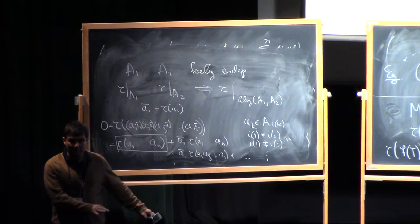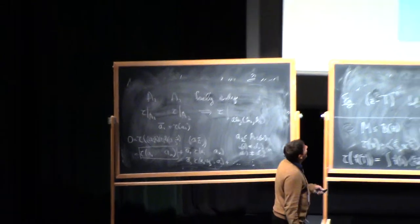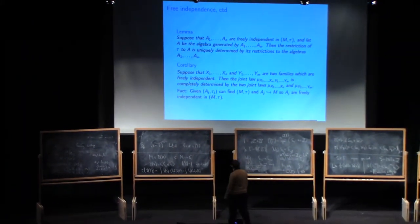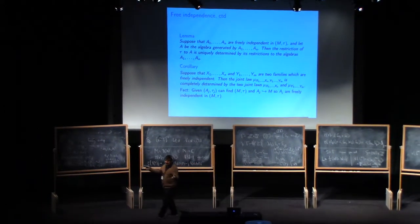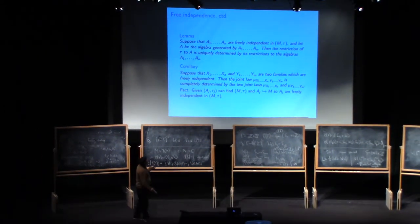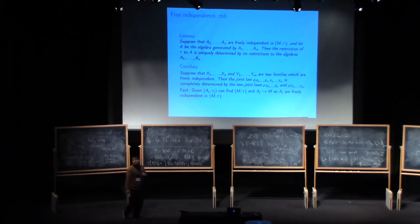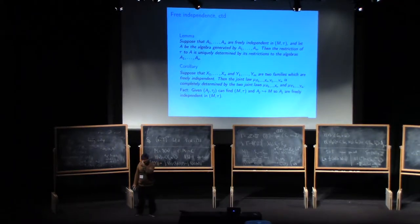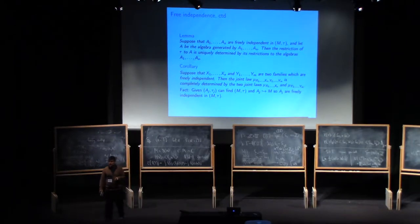Okay? Is that clear? All right. Now, the consequence of this is that if I have two families of variables, X's and Y's, and if I know the law of X's by themselves, and the law of Y's by themselves, and if I know that these two families are free, then their joint law is completely determined. In other words, I can compute the expected value of any polynomial in the X's and Y's in terms of the expected value of the polynomial in the X's and the expected value of the polynomials in the Y's.